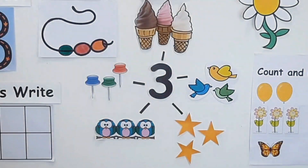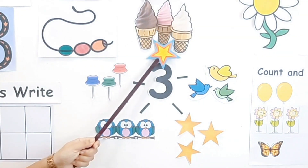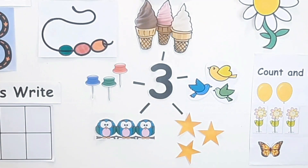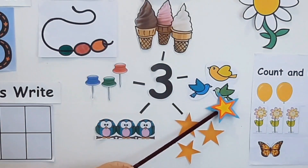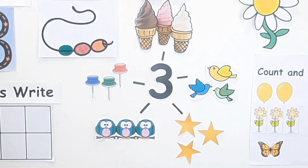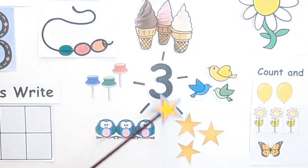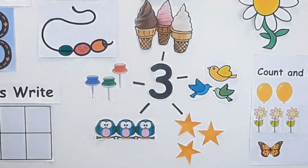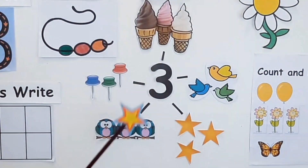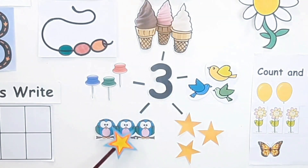Now let's count the ice creams: 1, 2, 3 — 3 ice creams! Now let's count the birds: 1, 2, 3 — 3 birds! Now let's count the stars: 1, 2, 3 — 3 stars! Now let's count the owls: 1, 2, 3 — 3 owls!